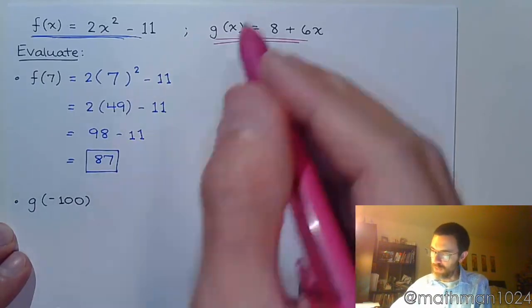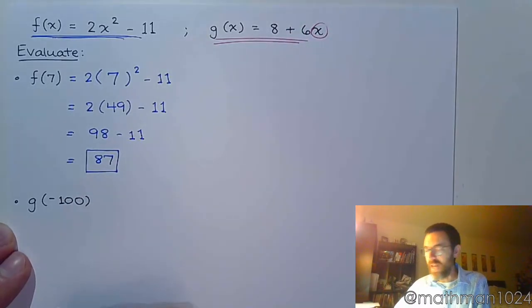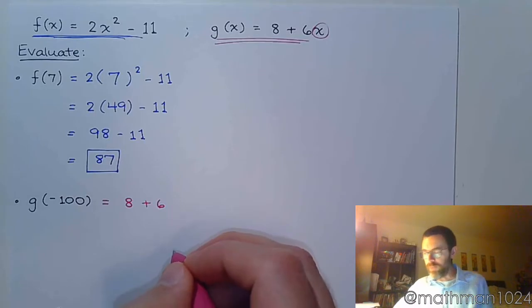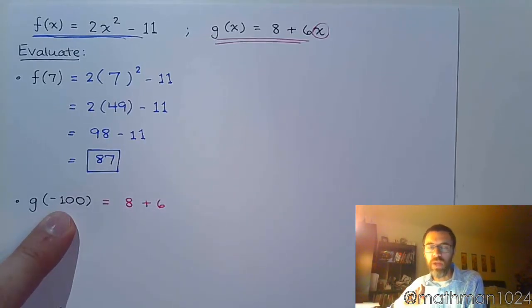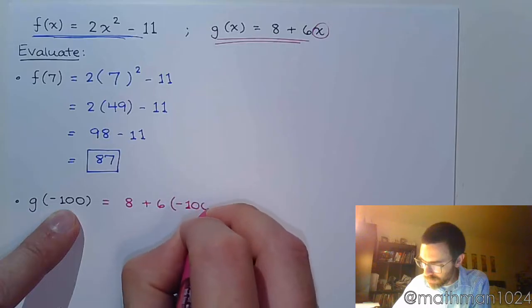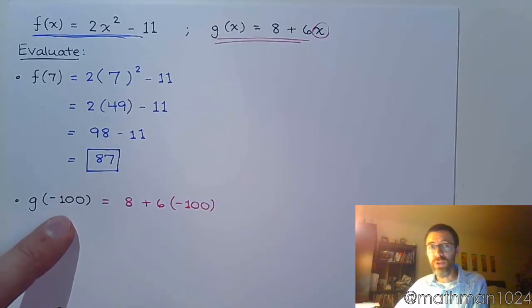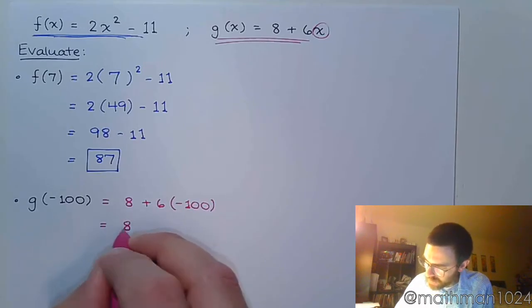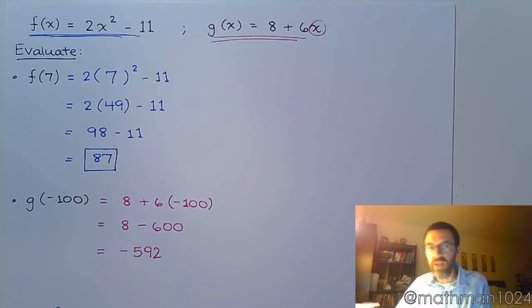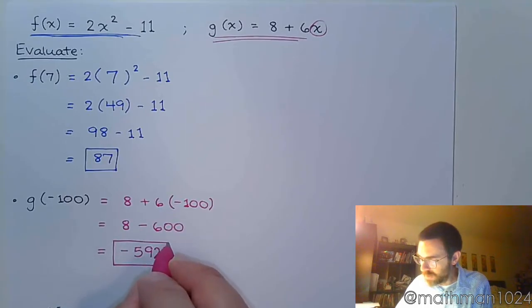Alright, g of negative 100. So let's come back up here. I'm going to replace that x with negative 100. So this is 8 plus 6. I need you to understand that right now, in this problem, x doesn't exist anymore. So if you write 8 plus 6x, you are wrong. Because this negative 100 is telling you, replace the x right now, immediately, with negative 100. That's what you're supposed to do. Make the substitution. Make the replacement. Do the math. So this now becomes 8. 6 times negative 100 is negative 600. And you find the difference here. So that's negative 592. Plug it in. Do the work. And move on.